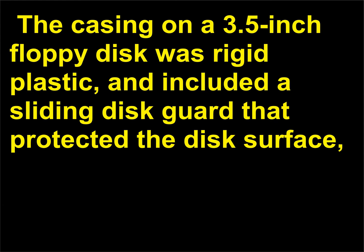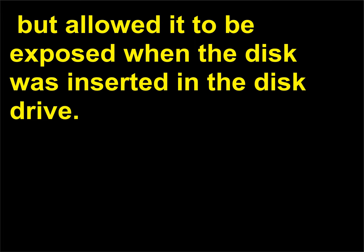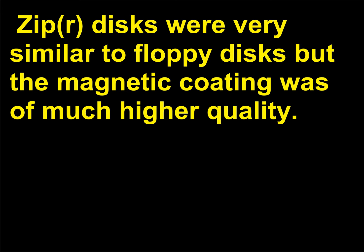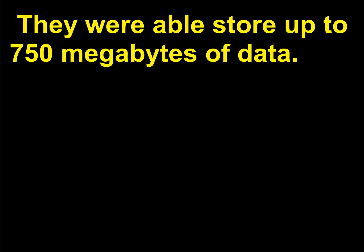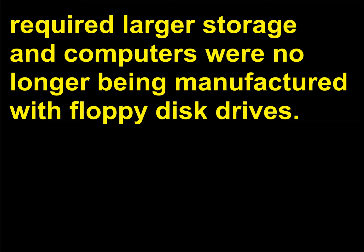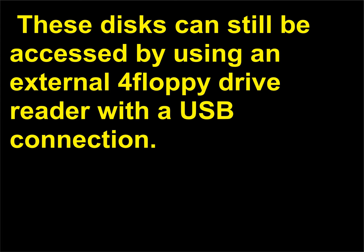The casing on a 3.5-inch floppy disk was rigid plastic and included a sliding disk guard that protected the disk surface but allowed it to be exposed when the disk was inserted in the disk drive. This protection, along with the increased data storage capacity, made the 3.5-inch disk the most popular. Zip disks were very similar to floppy disks but the magnetic coating was of much higher quality, and they were able to store up to 750 megabytes of data. By the mid-1990s, floppy disks and zip disks had become obsolete as computer files and memory required larger storage, and computers were no longer being manufactured with floppy disk drives. These disks can still be accessed by using an external floppy drive reader with a USB connection.